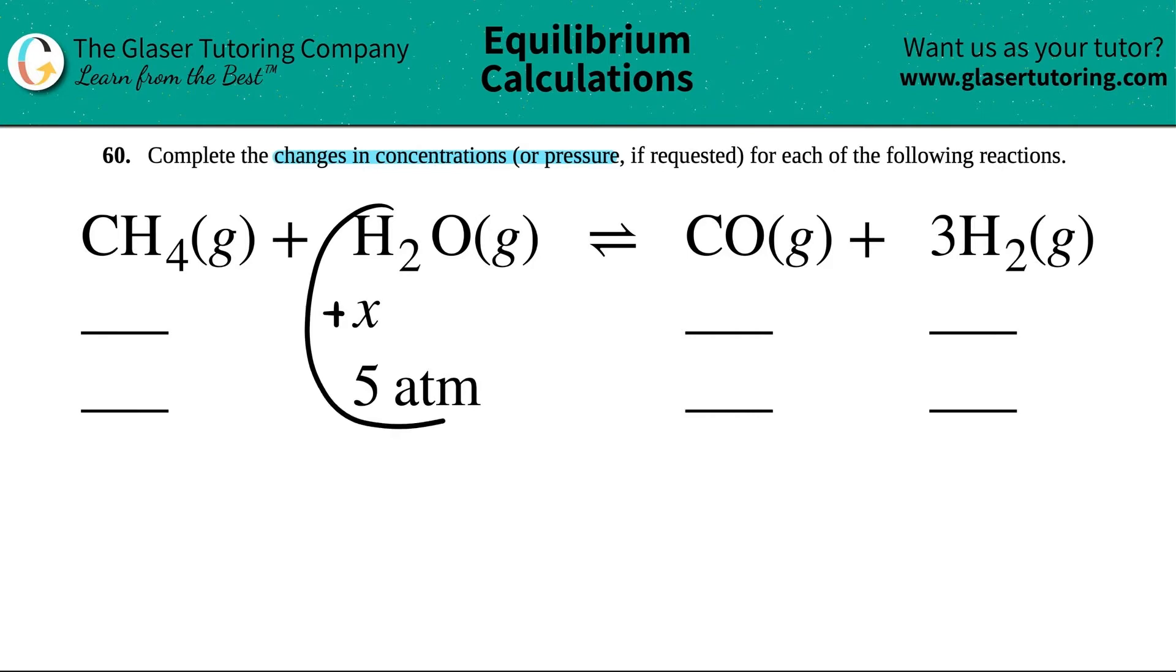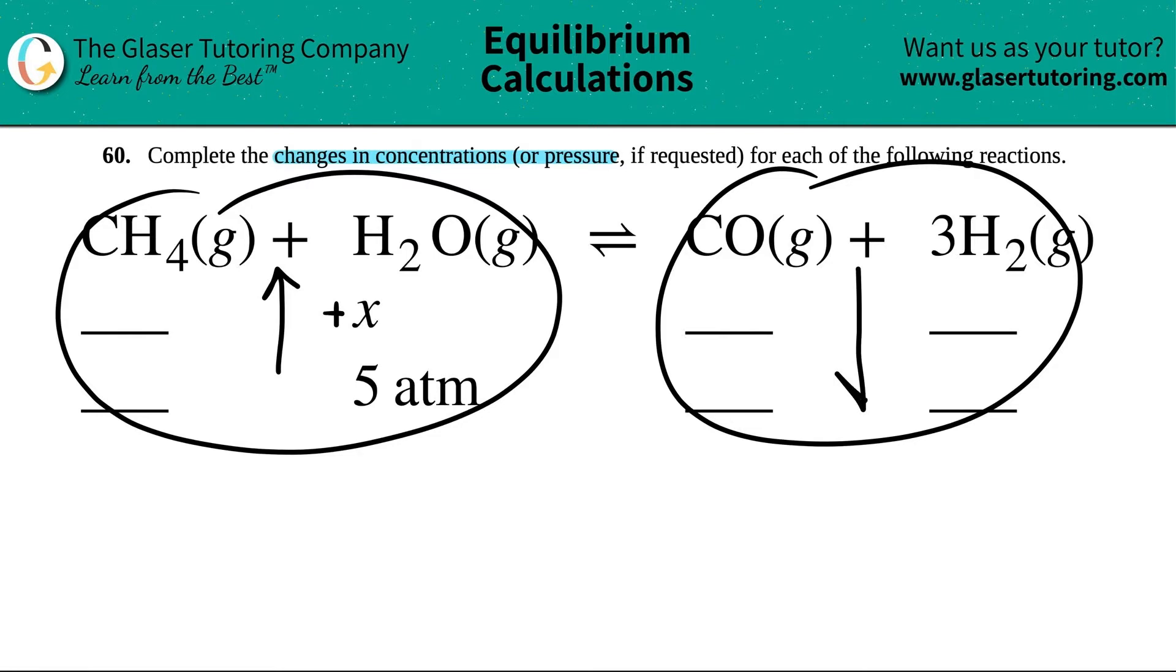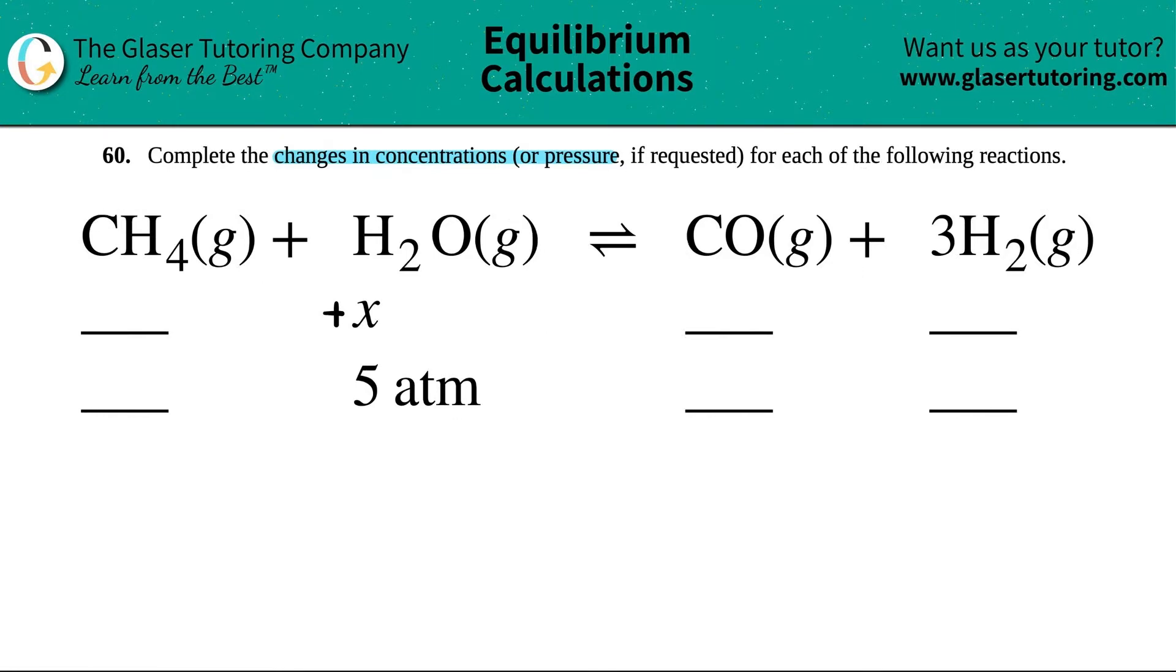If this one reactant was increasing, what do you think will happen with the other reactant? It's got to increase - they're on the same side of the yield sign. If all the reactants are increasing, that means all the products have to be decreasing. If one side's going up, the other side's got to be going down. If this was a positive x, that means CH4 gas also has to be positive, and since these are the products on the opposite side, these have to be decreasing - we signify that by negatives.